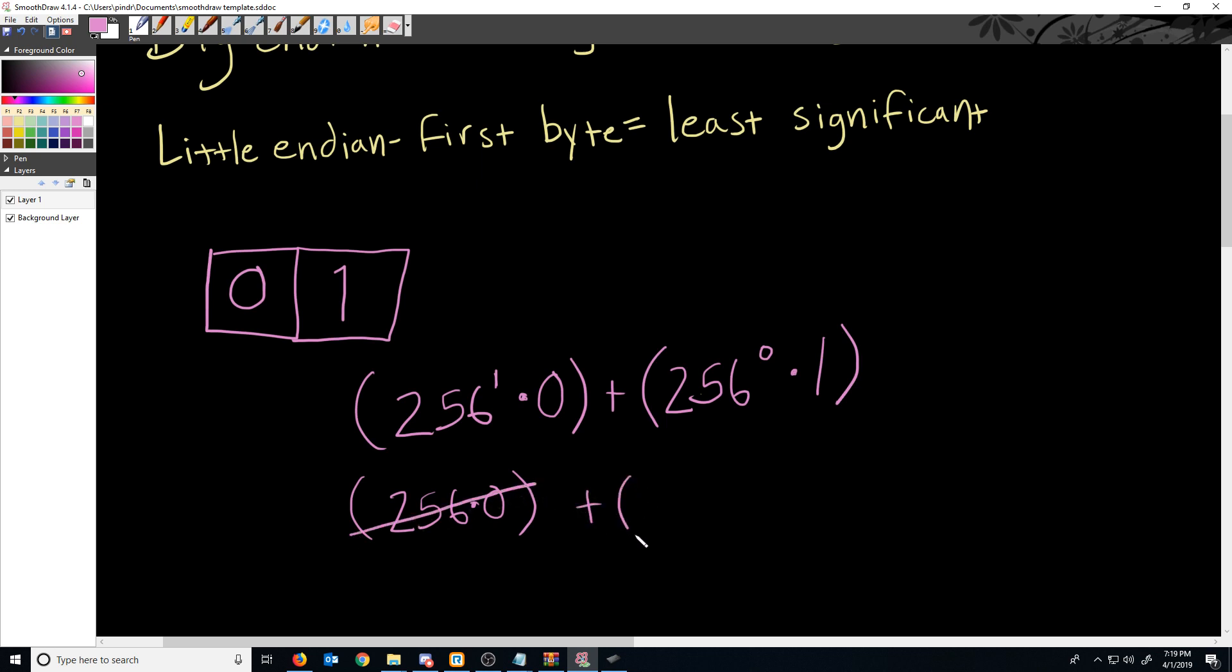And then over here, we will get one times one, because any number to the power of zero except for zero will give us one. So we end up getting one times one, which just equals one, which checks out.